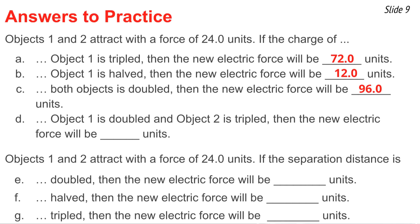The answer to C is 24 times 4, which is 96 units. And in D, the answer is 144, because if you were to double one charge and triple the other, you'd start with 24, double it, and then triple it — that is, times 2 and times 3 — giving you 144 units.